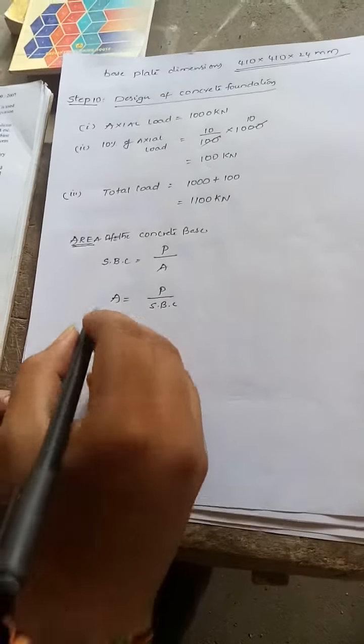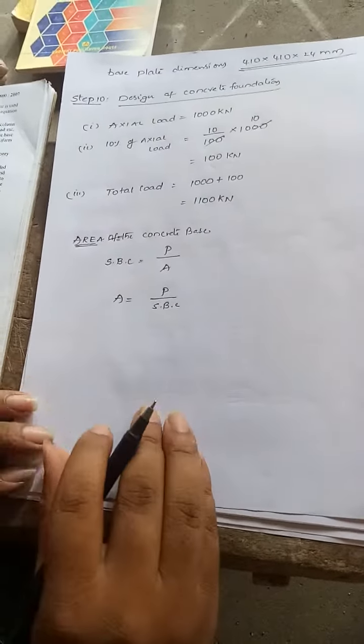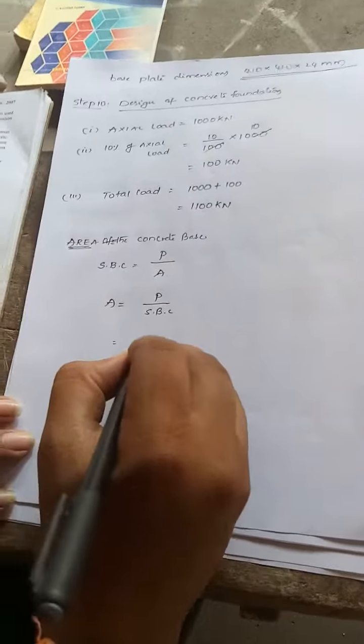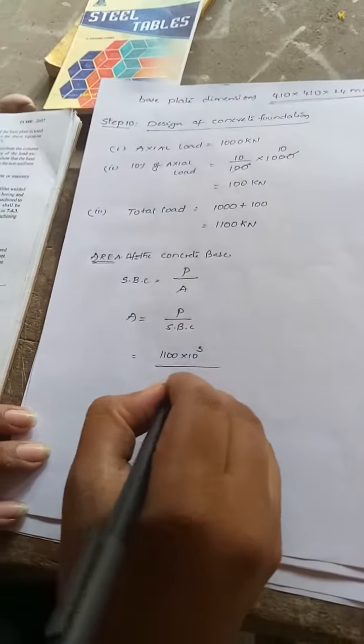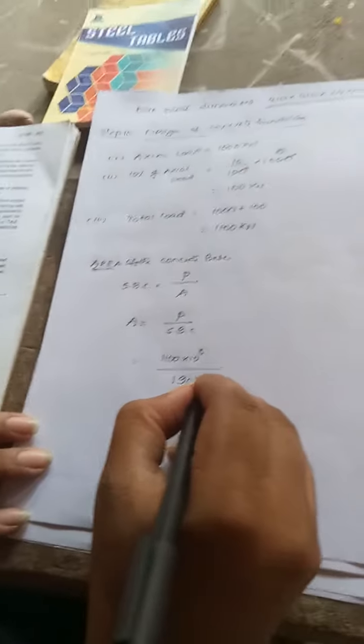Area equals load per safe bearing capacity: 1100 into 10 cube by safe bearing capacity 190 into 10.